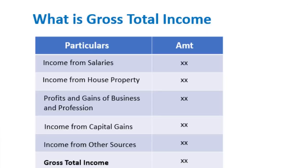Income tax is charged on total income. Let's talk about gross total income, which includes five heads of income: Number 1 is income from salaries, Number 2 is income from house property, Number 3 is profits and gains of business or profession, Number 4 is capital gains, and Number 5 is income from other sources.